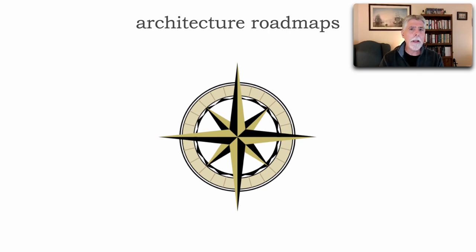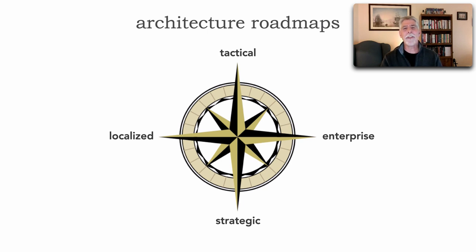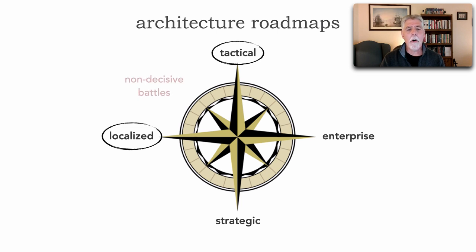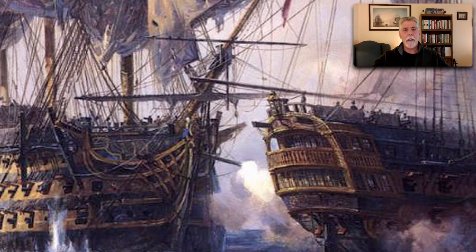If we take a look at a quadrant there are really four main access points: projects that can be tactical in nature — quick hit, generally technical — versus those that are strategic in nature with longer planning. On the other axis we have projects that are localized within a specific application or department, versus enterprise-wide spanning those divisions. For tactical localized projects I like to call these non-decisive battles. Imagine two ships meeting at sea and battling — is this really going to determine the outcome of the war? No. That's why I call them non-decisive battles.